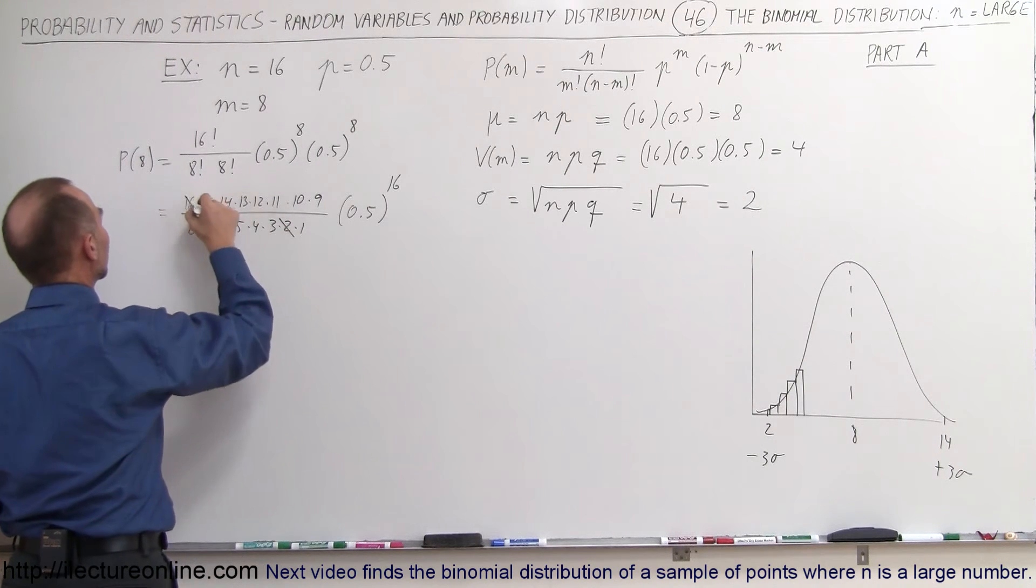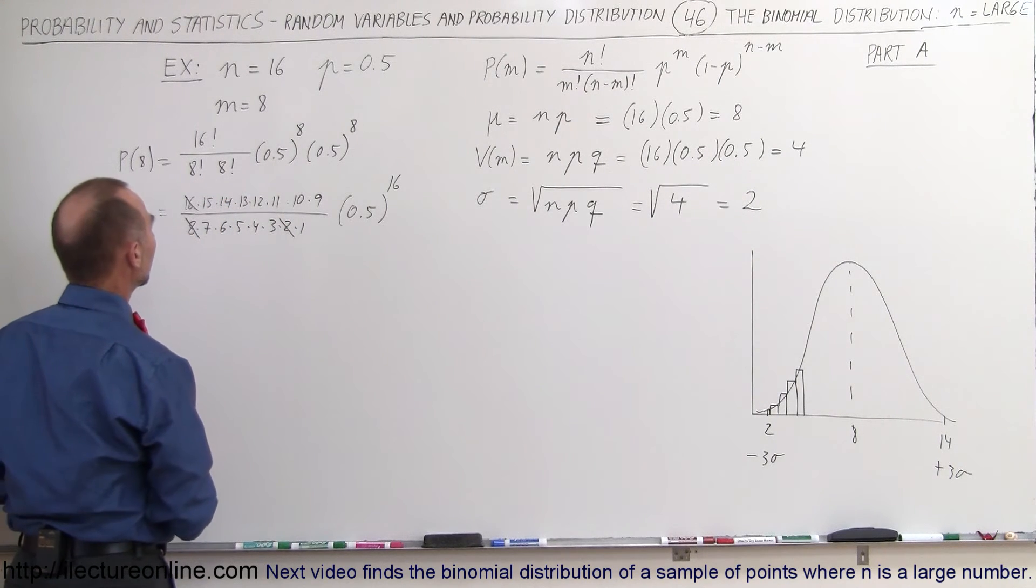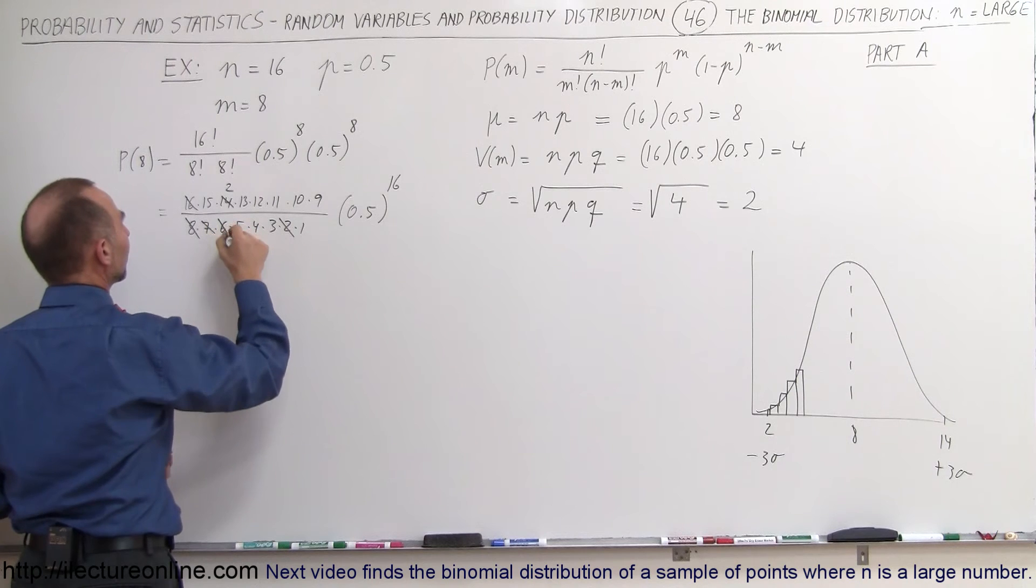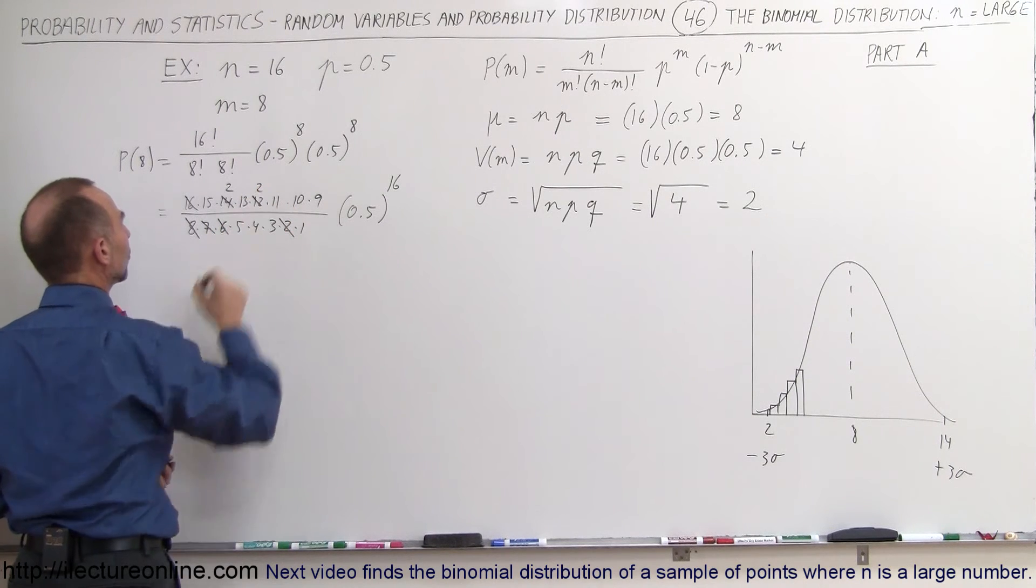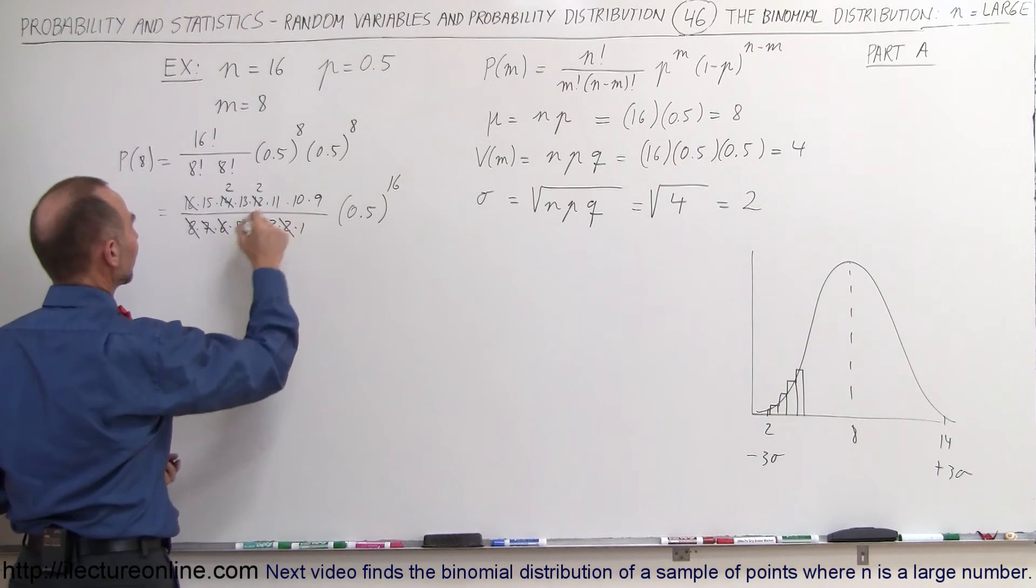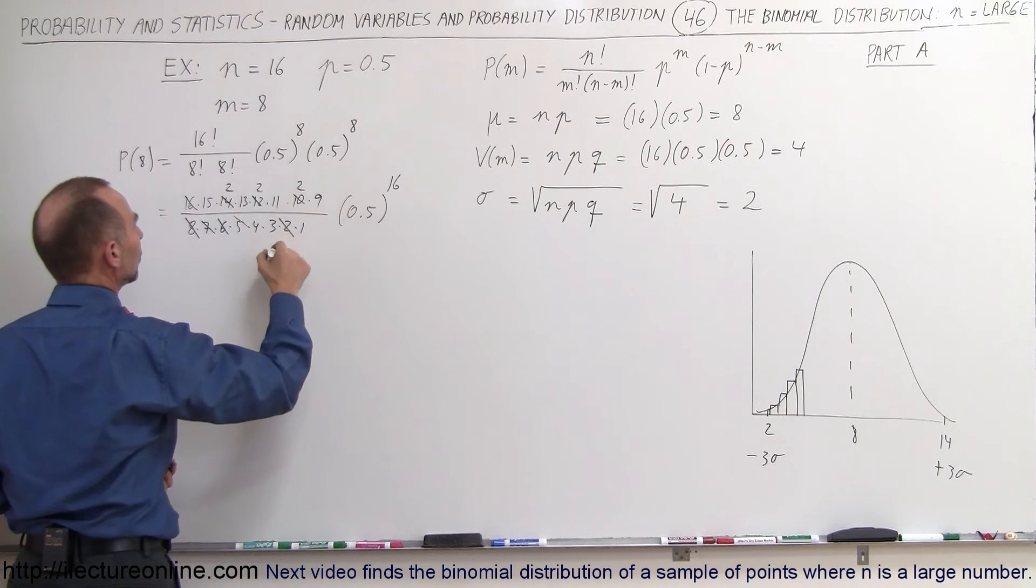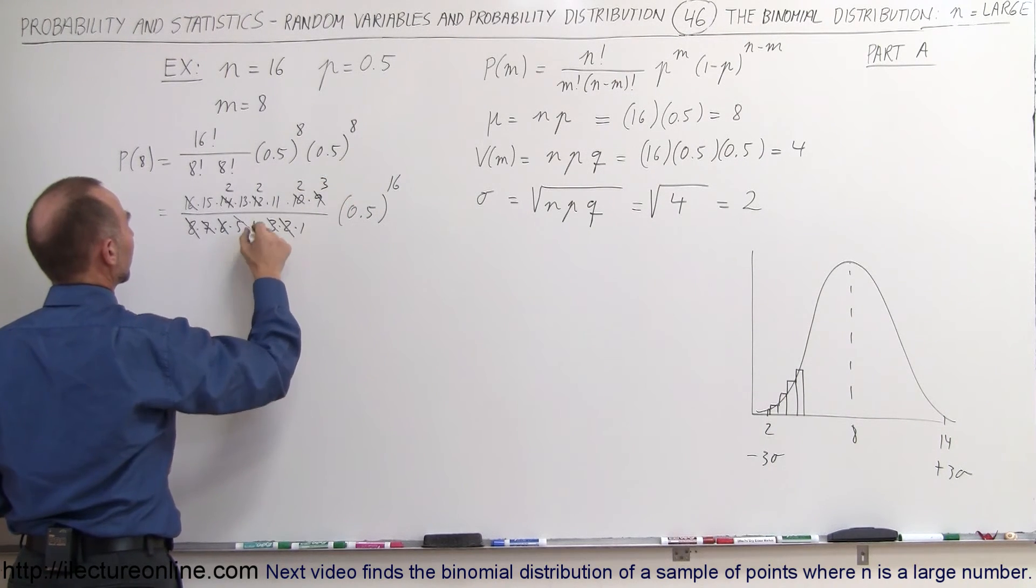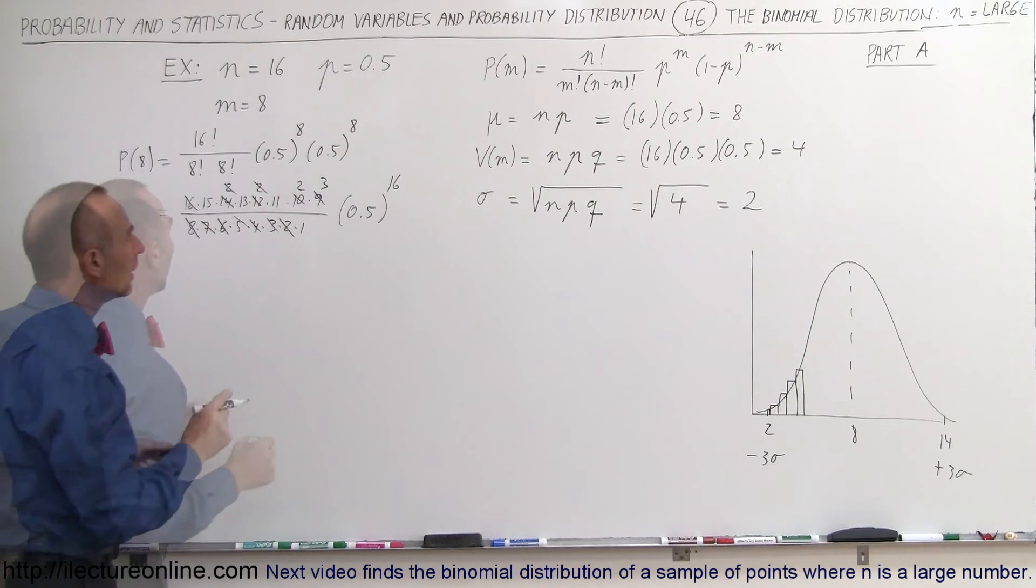Simplifying this a little bit more: 8 and 2 go into 16 and 1, so that cancels out. We have 7 and 14, that would be a 2. 6 and 12, that would be a 2 as well. 5 and 10, that would be a 2. And 3 and 9, that would be a 3. I have a 4 here which counts out these 2s.